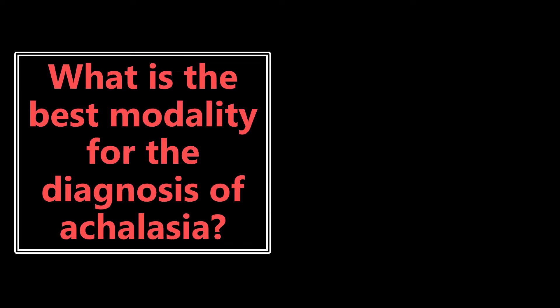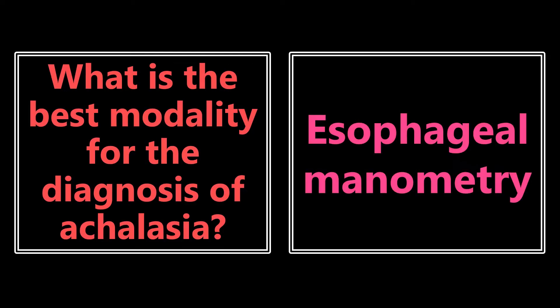What is the best modality for the diagnosis of achalasia? We probably remember this from Step 1 — it is esophageal manometry. Using esophageal manometry is the best way to diagnose achalasia because it allows us to measure muscle strength as well as coordination of contraction of the lower esophagus and to evaluate the lower esophageal sphincter.